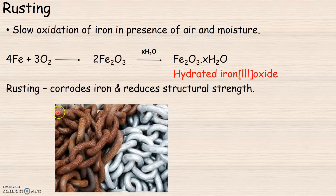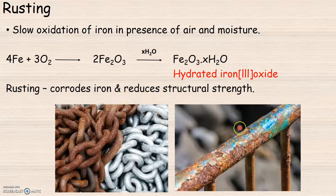Rusting can corrode iron and it reduces the structural strength of iron. As you see here in the picture, this process of rusting can corrode iron and will reduce the structural strength of these iron objects.